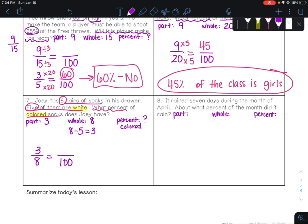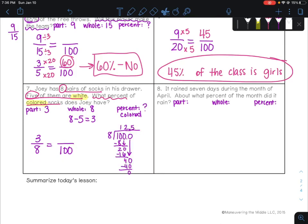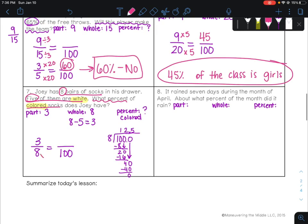So part over whole equals percent over 100. And on this one, I don't see any way to simplify, so we're just going to have to go with our division method. And there you can see that when you divide 100 by 8, you get 12.5. So that's telling me that to get between these, it's times 12.5. So then we're just going to need to know what is 3 times 12.5. And you can show that out. 37.5 or 37.5% colored socks.